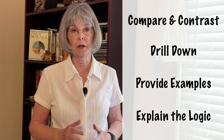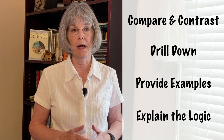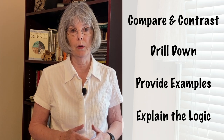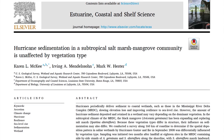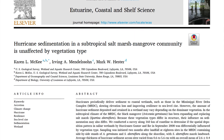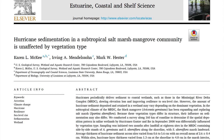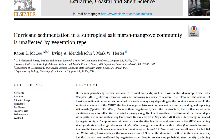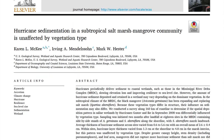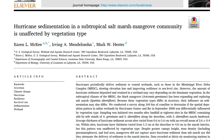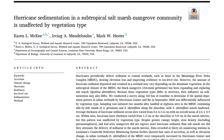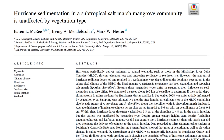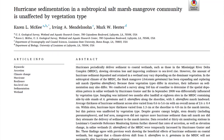Let's look at a paper to see how these four approaches work. In this study, our objective was to determine if hurricane sedimentation in a subtropical salt marsh mangrove community was influenced by vegetation type.